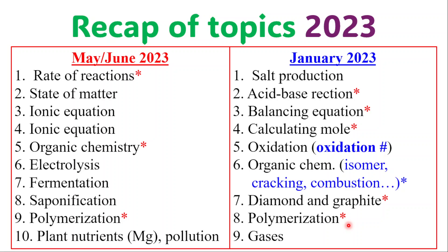For the 2023 papers — May/June first: rates of reaction is quite a common topic. States of matter, ionic equations, half equations — please know those. Organic chemistry again is almost inevitable, so pay attention to that. Electrolysis, fermentation, saponification, and polymerization, which is frequently tested. Plant nutrients — specifically magnesium and its use in plants. They also looked at different chemical reactions relating to pollution, specifically for water and land — look out for those things as well.